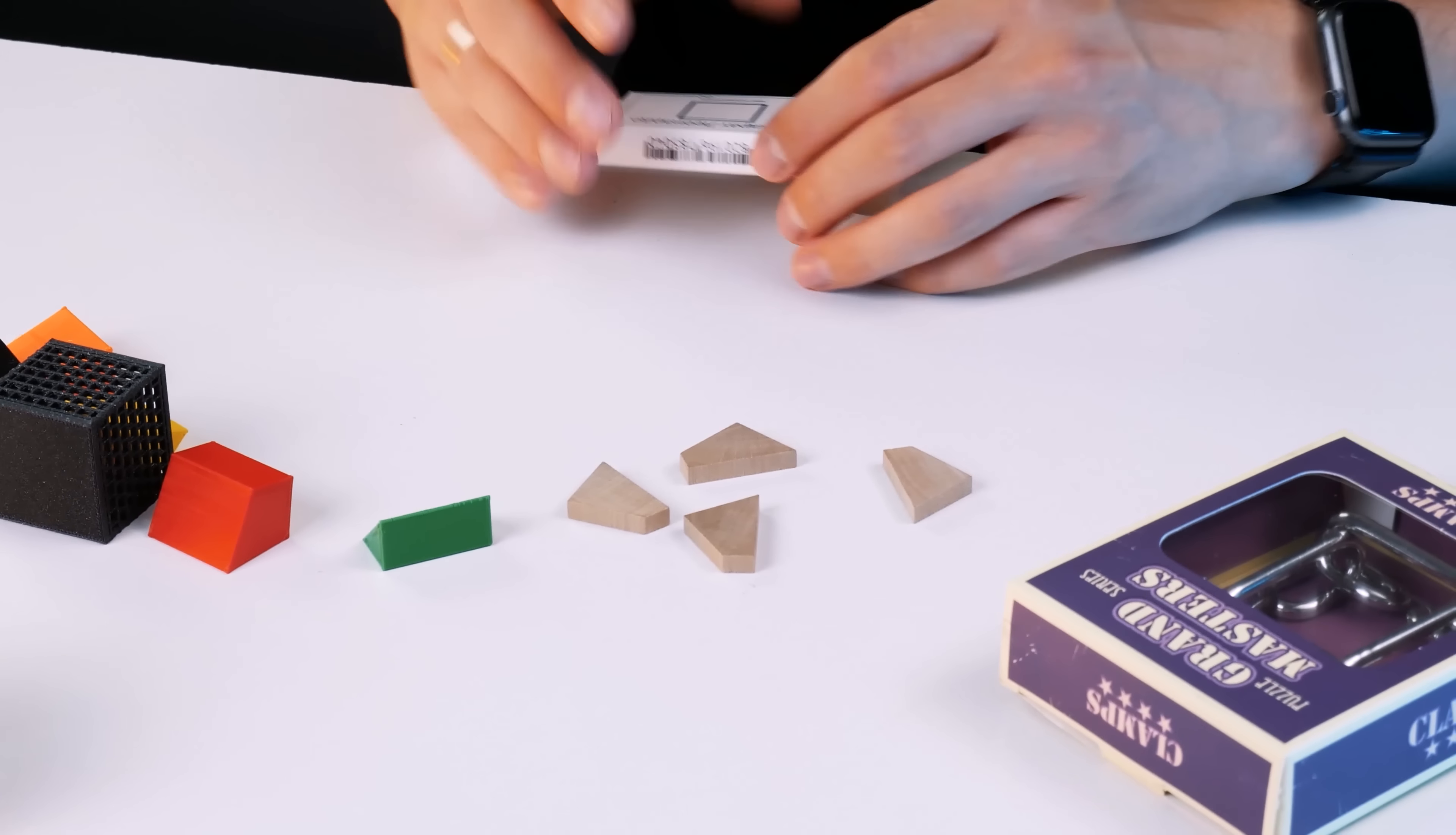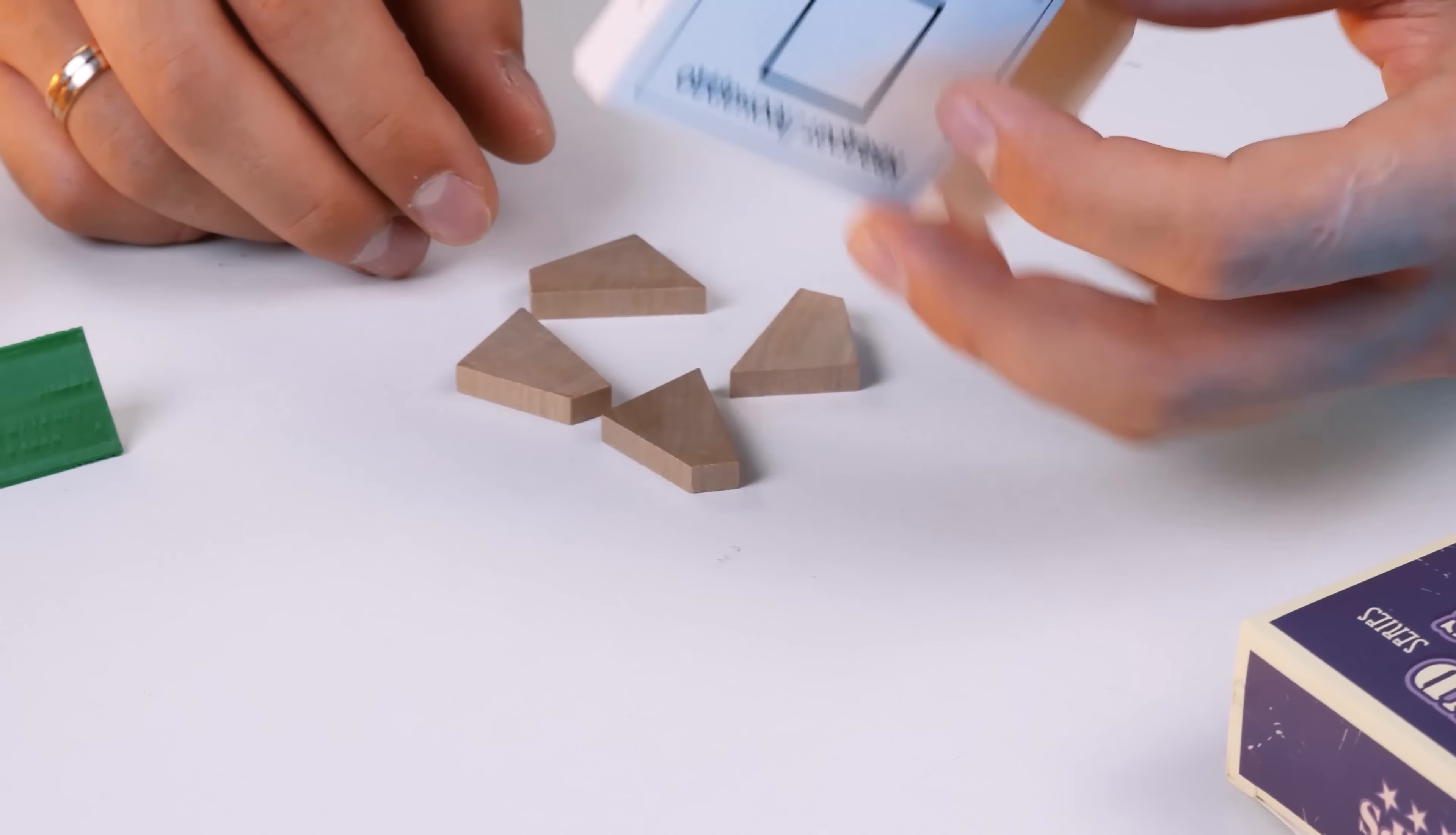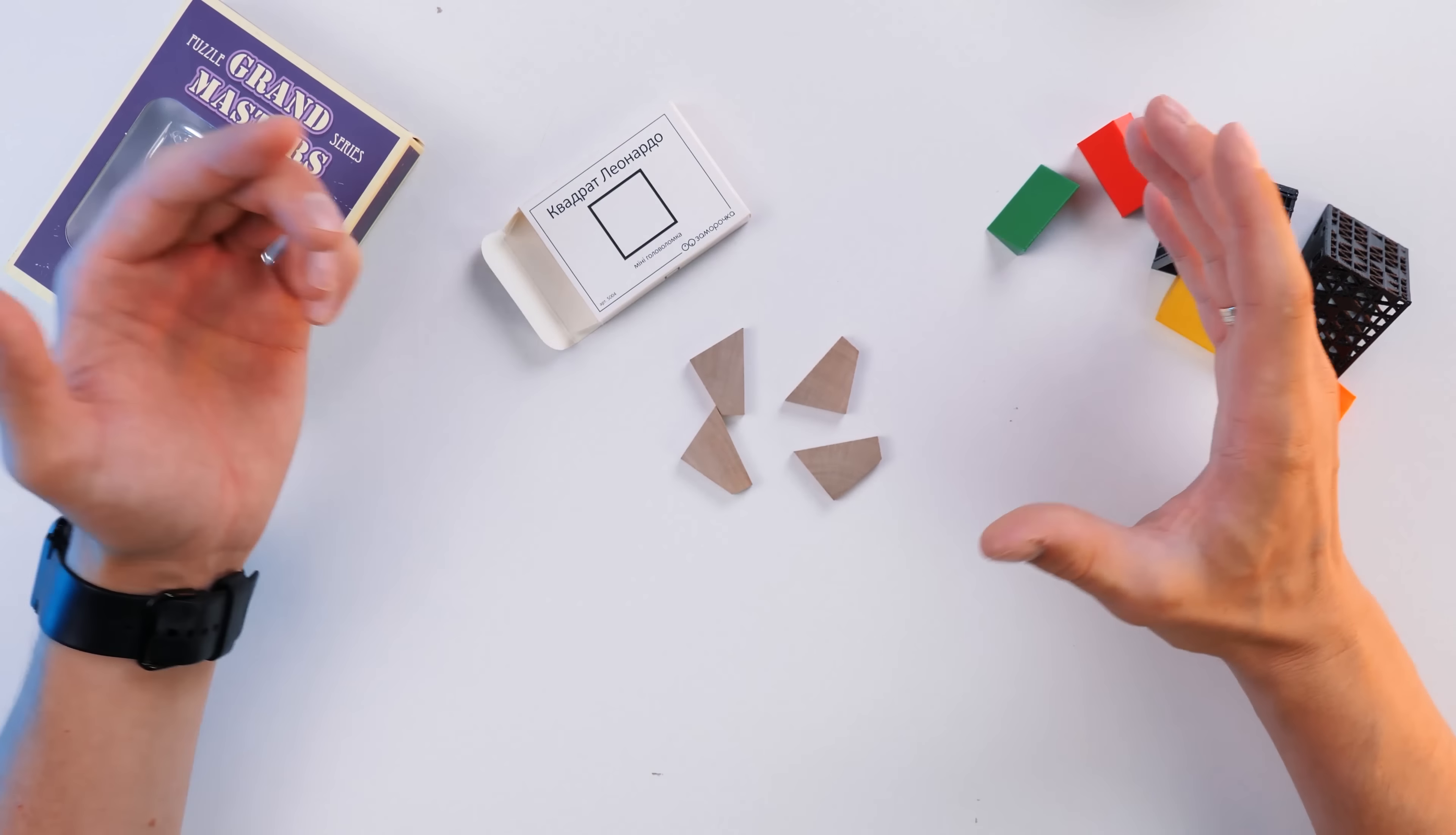Four details, just like I said. And the interesting thing is, they are completely identical. And our task is to assemble this square. It may be of different size, but it should be a square. Let's remember how such puzzles are solved. At first glance, a very simple task. But it's not easy.